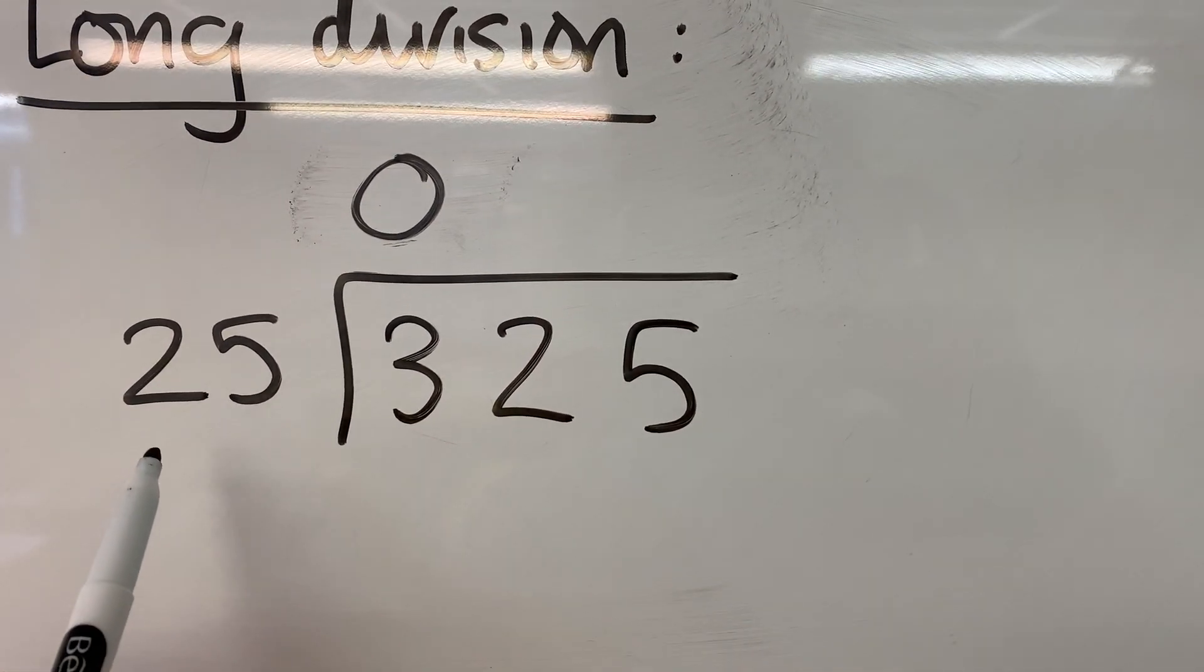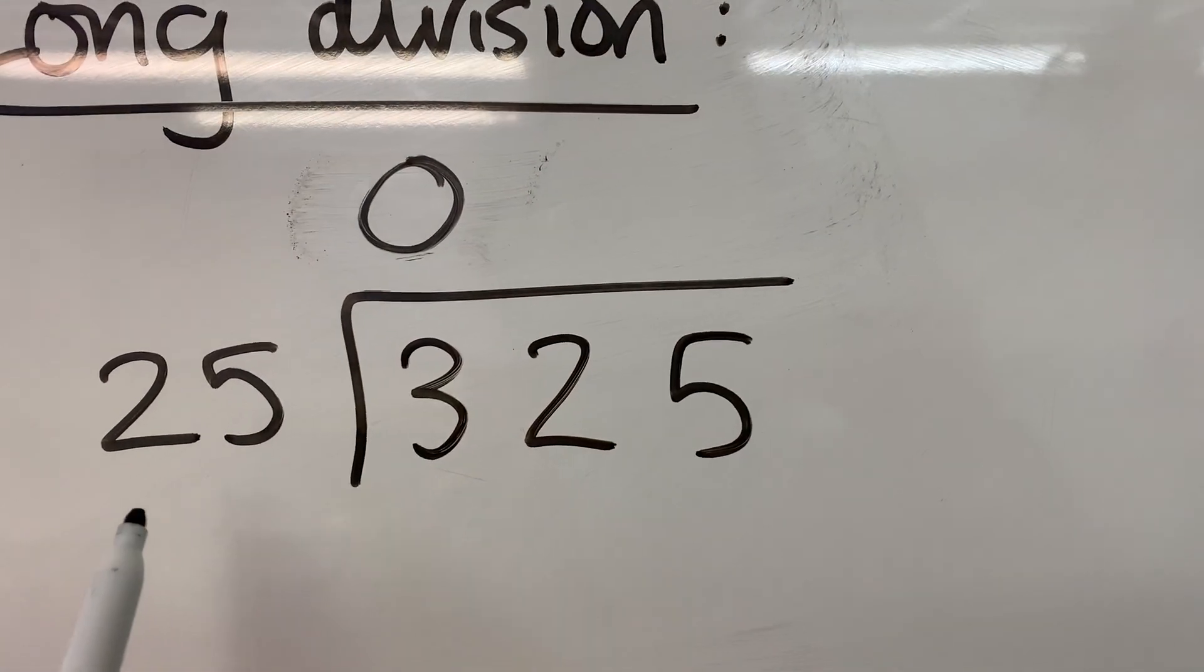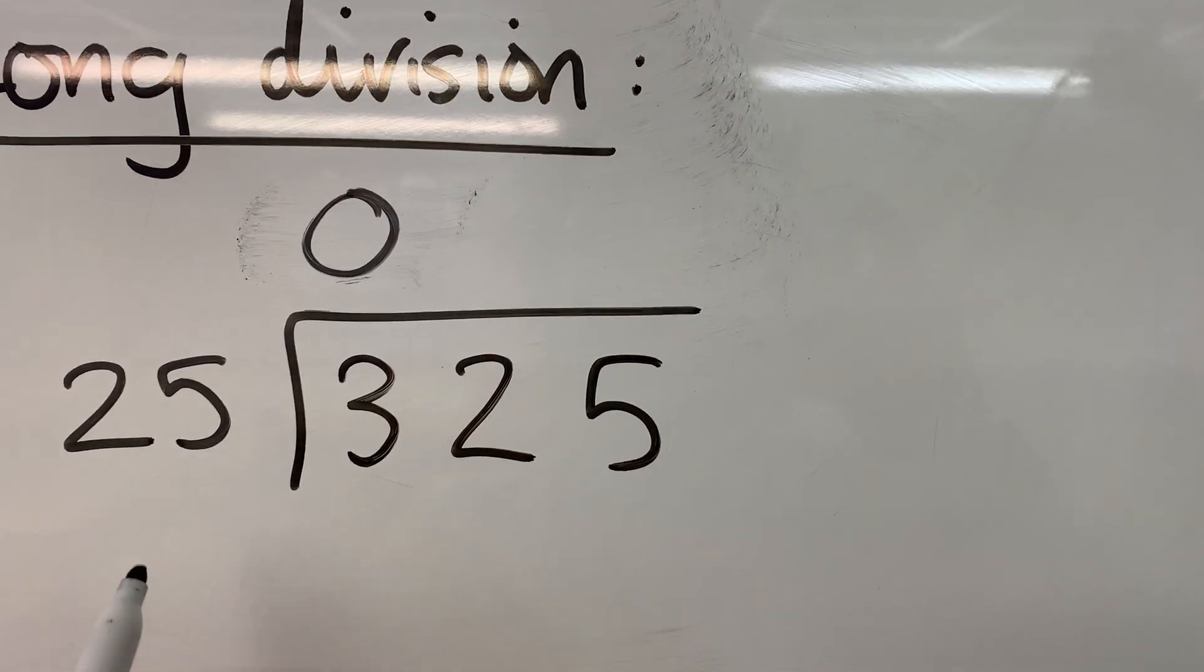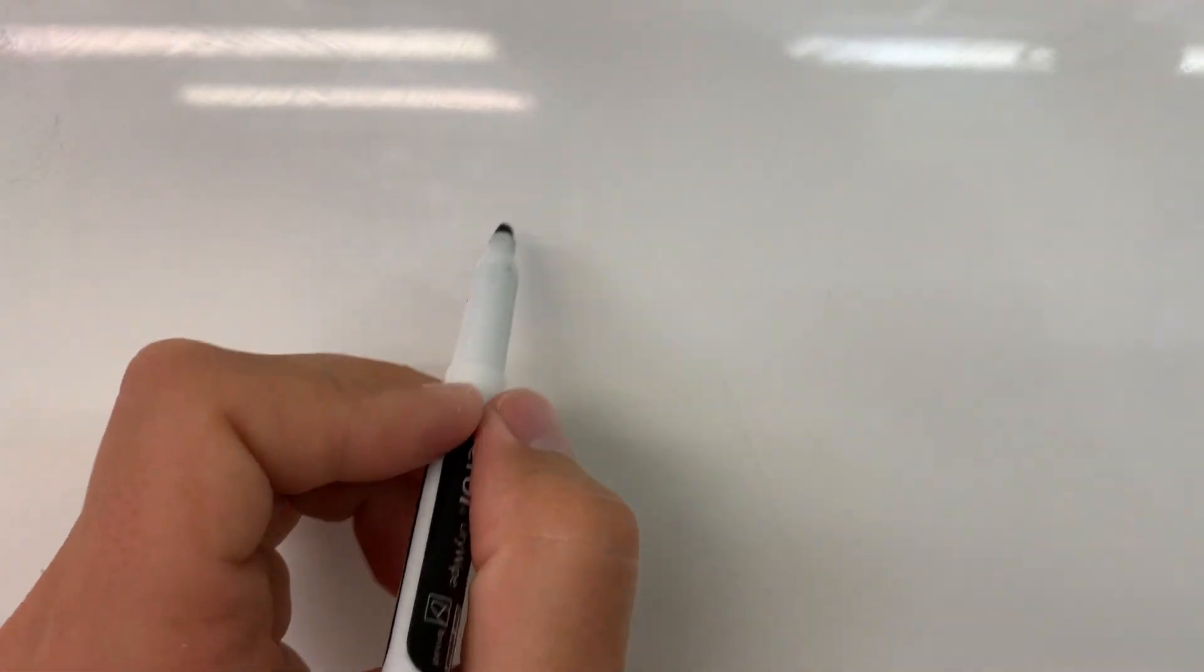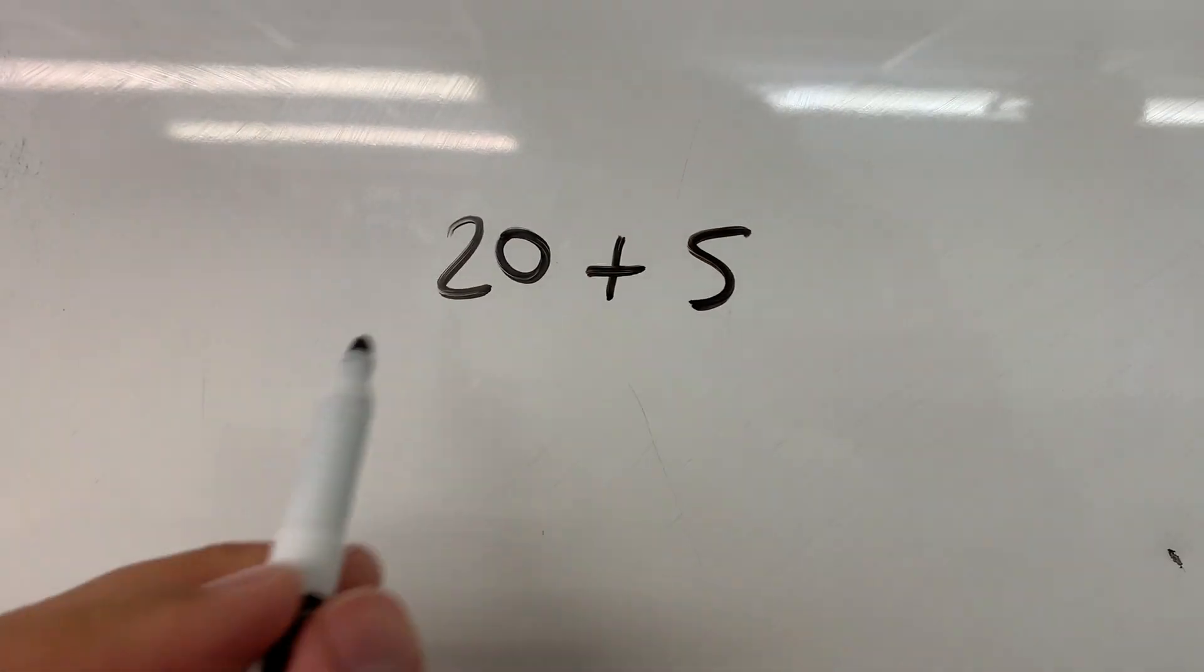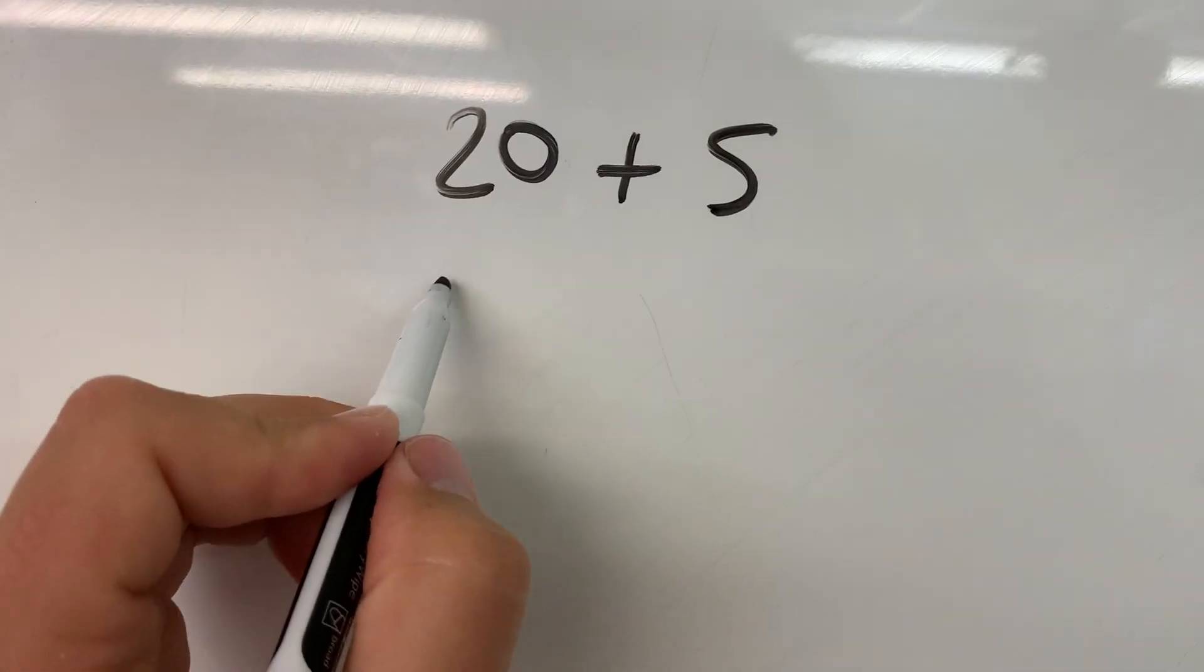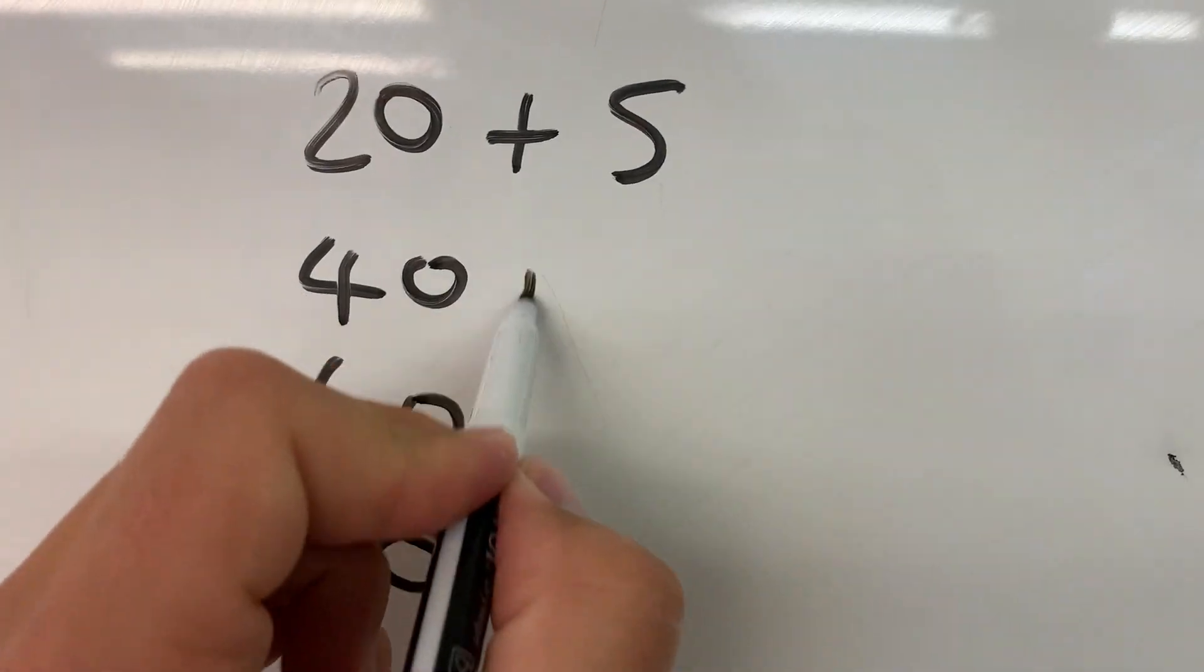If you're struggling to write out or think of your times tables for your two digit number, which you probably will do when you have, say, like your 27 times table or your 34 times table, you can write out a skeleton times table here where you count, you partition the number, so 20 plus 5, and you count up in those partitioned numbers.